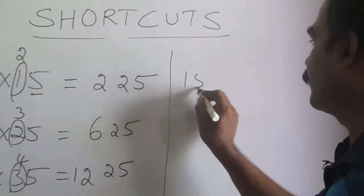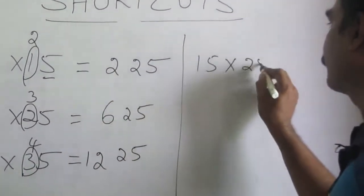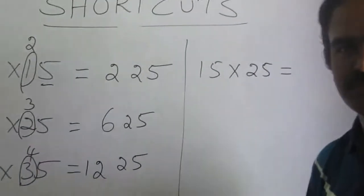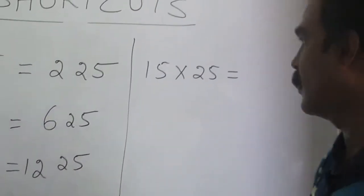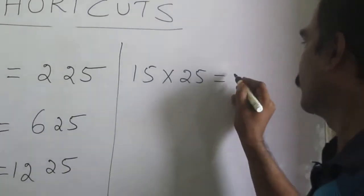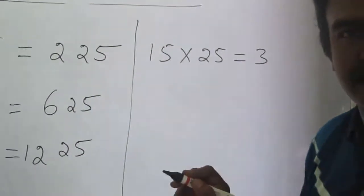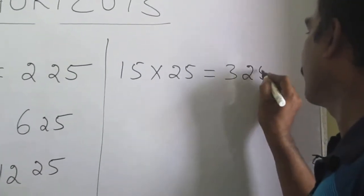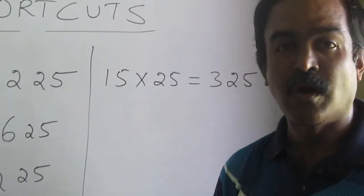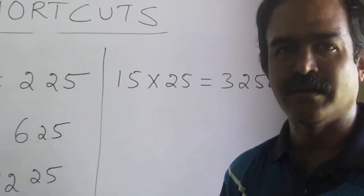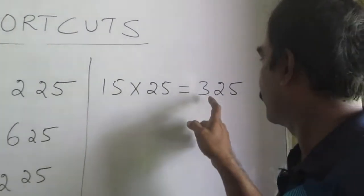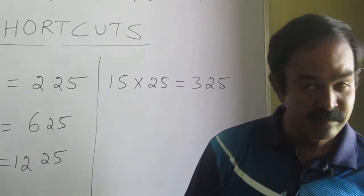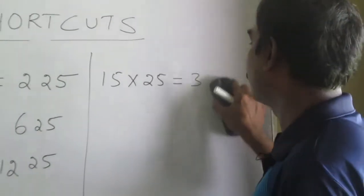What is 15 times 25? Your time starts now. What's your answer? One student says 4, another says 325. So you are halfway correct and halfway wrong. Your answer is 325, but the real answer is 375.